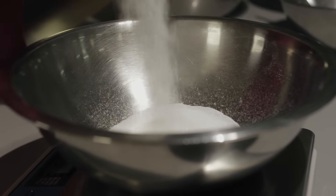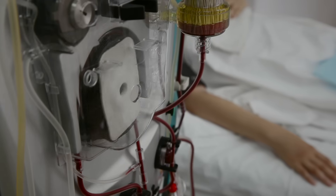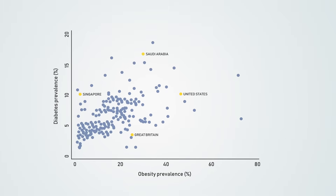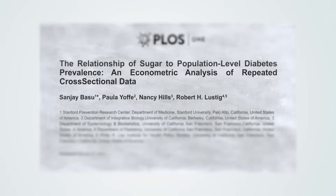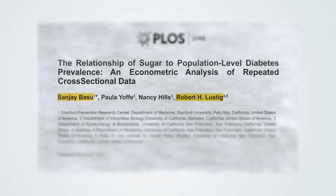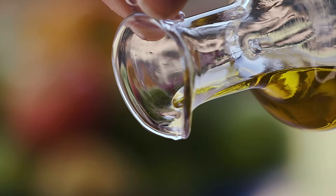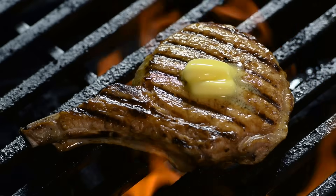One very good study out of Stanford University, involving 175 countries, looked at sugar availability and consumption worldwide. What Sanjay Basu and Robert Lustig found was that for every 150 calories of excess sugar consumed over one's daily quota, compared to 150 calories from another source such as fat or protein, there was an 11-fold increase in the prevalence of type 2 diabetes.